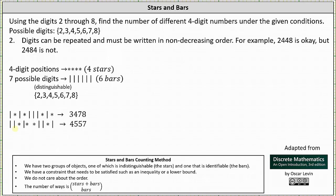So all the strings of four stars and six bars will give us all the possible ways we can form different four-digit numbers in which the digits can be repeated and must be written in non-decreasing order. And there are ten choose six possible strings. Notice how we can relate this to bit strings, where this is the same as the number of ten-bit strings of weight six. Using stars and bars, the number of ways is the sum of the stars and bars choose the number of bars, which again gives us ten choose six.